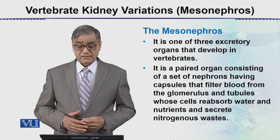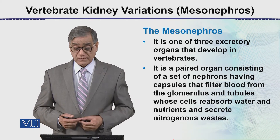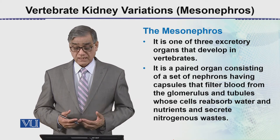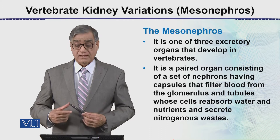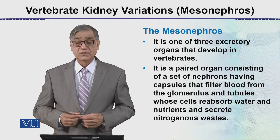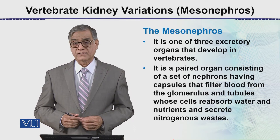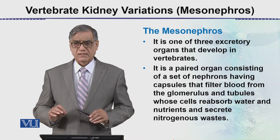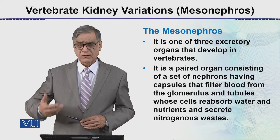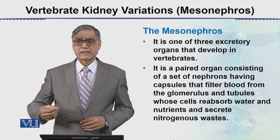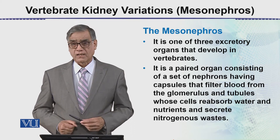Mesonephros کو intermediate سمجھ سکتے ہیں، یا کچھ animals کے اندر یہ final stage ہے۔ So it is a paired organ consisting of a set of nephrons having capsules جیسے adult kidney کے اندر ہوتے ہیں, that filter blood from the glomerulus and tubules whose cells reabsorb water and nutrients and secrete nitrogenous waste — یہ concise summarized form میں excretory process ہے۔